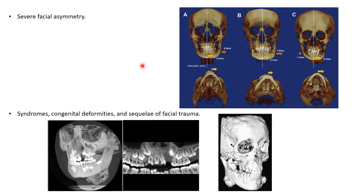CBCT can also be taken for patients with severe facial asymmetry. While an anteroposterior or posteroanterior radiograph shows only two dimensions — vertical and transverse — without showing the anteroposterior dimension, the three-dimensional radiograph shows exactly the amount of asymmetry, measured in millimeters. CBCT is also indicated in cases of syndromes and congenital deformities.